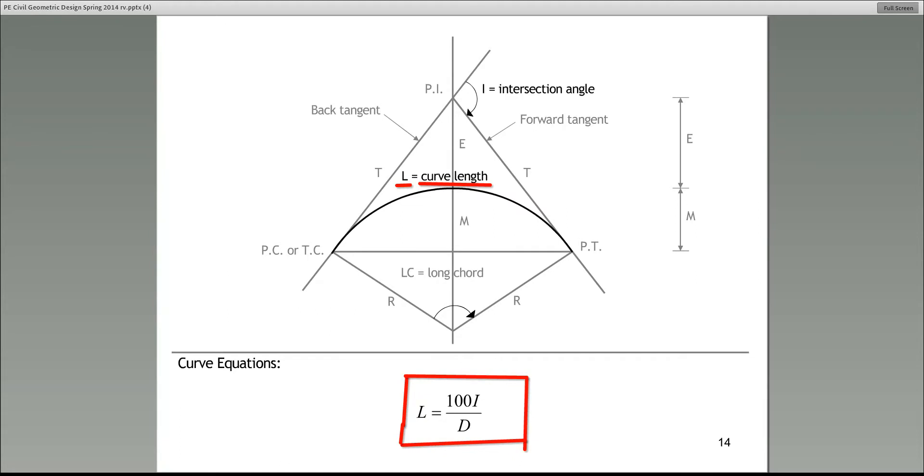Paul is asking a question about the external distance. Yeah, what you're saying, Paul, is correct. E, the external distance, is the distance between the PI and the midpoint on the curve.